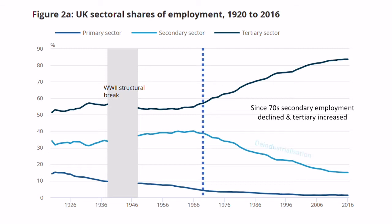Two of the processes I'll talk about are deindustrialisation — that is the loss of industry from an area or country — and tertiarisation, which is the increase in services in an area or country. So we can see as one goes down the other goes up, and this is the shift in the amount of people employed in one sector going to another.